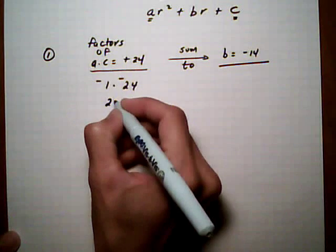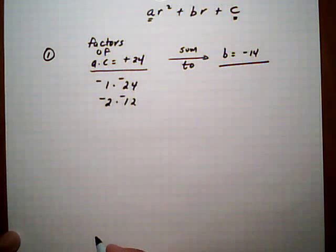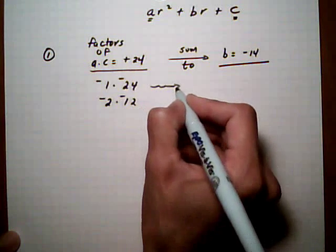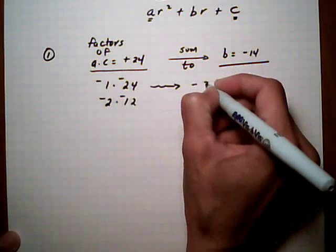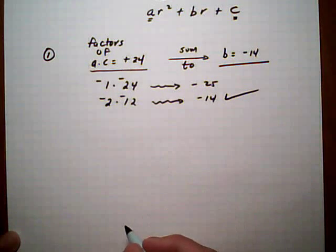So we got 1 times 24, 2 times 12, both of them being negatives. You want to be looking to see what they add up to. This one adds up to minus 25. This one adds up to minus 14. Right there we've got it, so we stop.